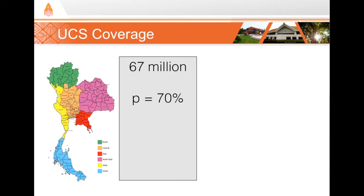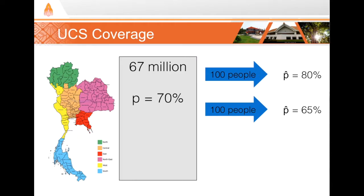70% of Thailand's 67 million people are covered by UCS. We can consider those 67 million Thais our population, and that 70% would be the true population proportion. Imagine I start taking samples of 100 people each — in one sample I might find 80% covered, in another 65%, and in another 70%.